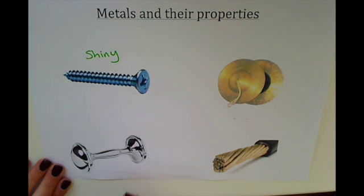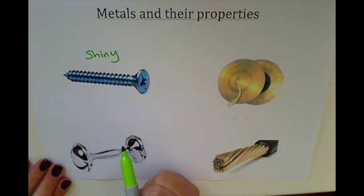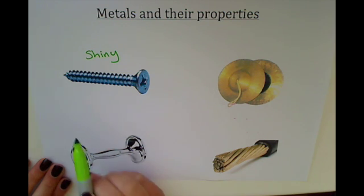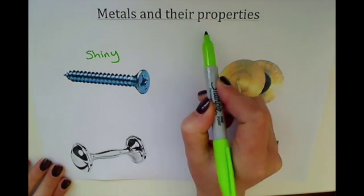But when you cut into the metal, you can again see straight away that it's shiny. So metals such as sodium and potassium, if you've ever seen a teacher use those in the lab, they will look slightly dull on the outside, but once they cut into the metal, they'll look shiny. So that's our first property of metals—they all look shiny.